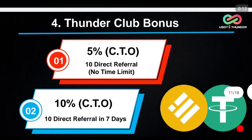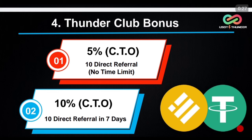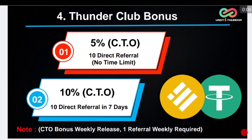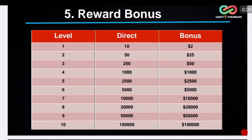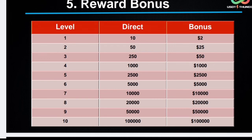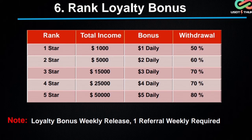Thunder club bonus: it is a 5% company turnover bonus (CTO). To get this 5% CTO, you have to direct 10 members — there is no time limit. If you direct 10 within seven days, you can get 10% of CTO. CTO means company turnover. This bonus is released on a weekly basis, and one referral weekly is required. For reward bonus: if you complete 10 directs on your first level you can get $2; on your second level with 50 directs you can get $25 — as per the chart.